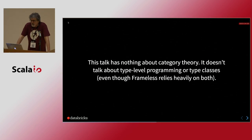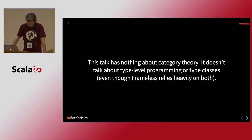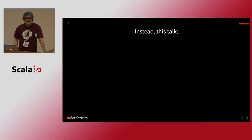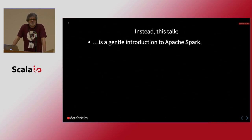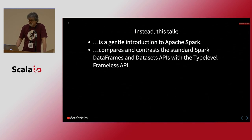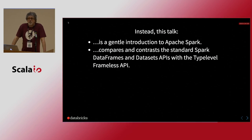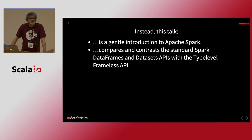There's nothing in this talk about category theory. We're not talking about type-level programming or type classes, even though Frameless makes heavy use of both. This talk is listed as an introductory or beginner's talk, and it more or less is. Instead we're going to focus on a gentle introduction to Apache Spark, but with a slightly different focus. We're going to compare and contrast two popular APIs — the DataFrames API and the Datasets API — both available in Scala, and then compare that with the Frameless API, showing some pluses and minuses of each. It'll be a little bit biased toward Frameless, though I am not an expert in it.